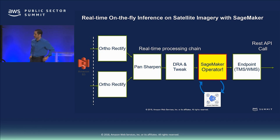Question: could I pull something less processed from the archive — if I don't want it sharpened or adjusted — and just take the seven bands of raw data and pull it into SageMaker? Absolutely. You can do that.